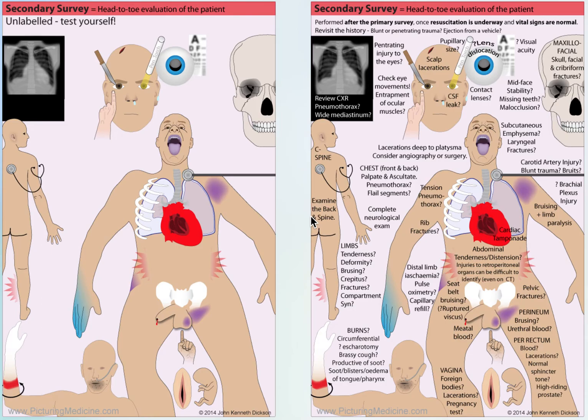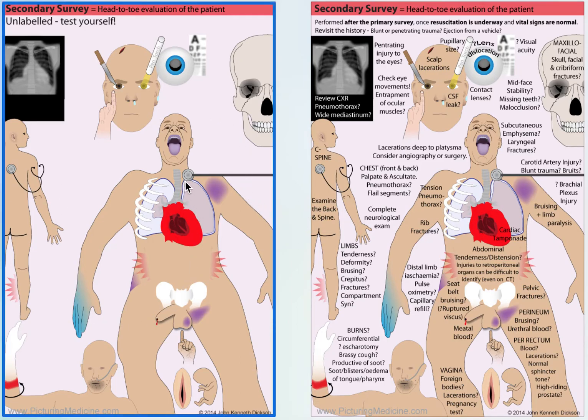The secondary survey. This is when the patient is stable and after the primary survey, and you're looking for anything else that you may have missed. You need to do a head-to-toe evaluation of the patient, and there are lots of things to consider if you are going to be thorough and pick up on things. Cast your eyes all around this image — it will help you to recall all of the things that you might be looking for. It's kind of a head-to-toe diagram.